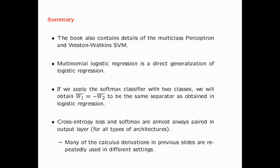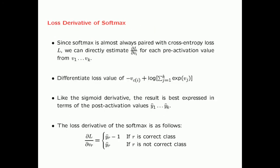This is essentially a direct generalization of logistic regression. If you apply the softmax classifier with two classes, you obtain two weight vectors W1 and W2 satisfying W1 equals minus W2, and this separator is the same one obtained by binary logistic regression. The book also contains details of the Multiclass Perceptron and Weston-Watkins SVM. This cross-entropy loss and softmax are almost always paired in the output layer for all types of neural network architectures. The derivation of the loss function with respect to the pre-activation value is a useful intermediate result that should be committed to memory, as it is used repeatedly across many settings.